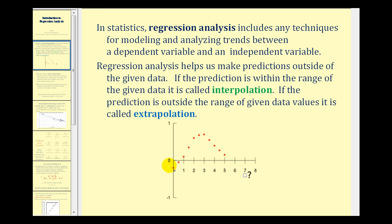So for example, if we have this red set of data plotted on the coordinate plane, if we wanted to make a prediction at, let's say, x equals 1.2, maybe somewhere in here, because this would be within the range of the given data, it would be interpolation. But if we wanted to make a prediction at, let's say, x equals 7, maybe here, since 7 is outside the range of the given data, it would be called extrapolation.